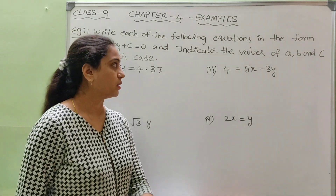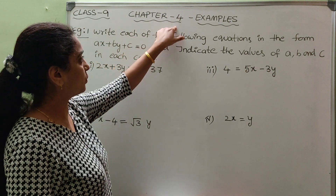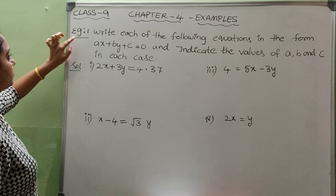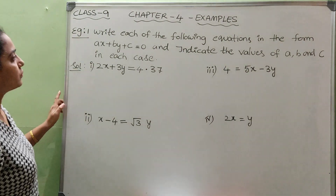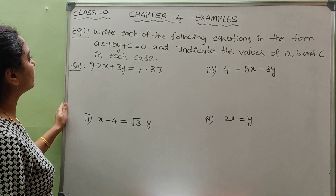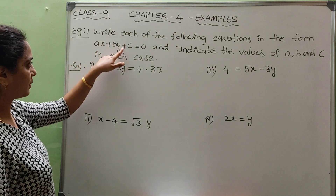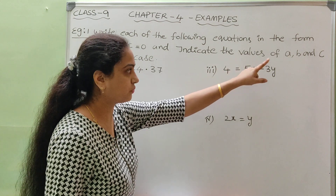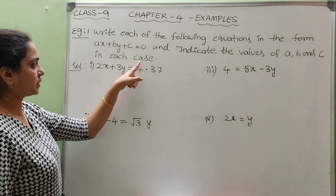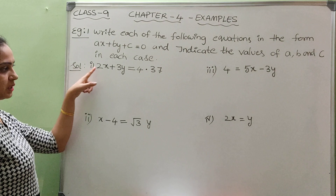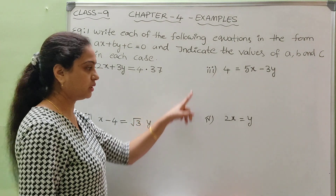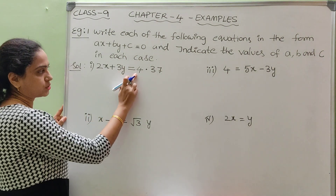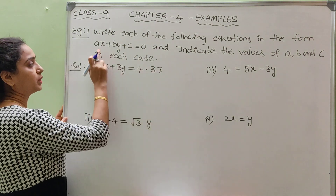Hi friends, today's class is Chapter 4 example questions, Class 9th. Example 1: write each of the following equations in the form ax plus by plus c equals to 0 and indicate the values of a, b, and c in each case. In example 1, they have given 4 questions. First one: 2x plus 3y equals to 4.37.